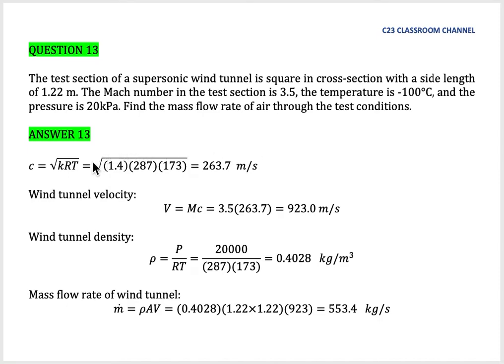We can calculate the speed of sound using this equation and get around 263.7 meters per second. Bear in mind that the temperature needs to be converted from minus 100 degrees Celsius to Kelvin units, giving us 173 K.